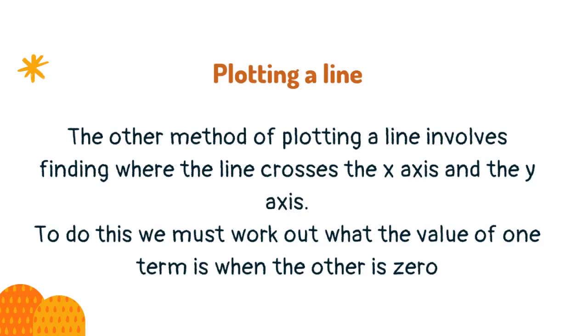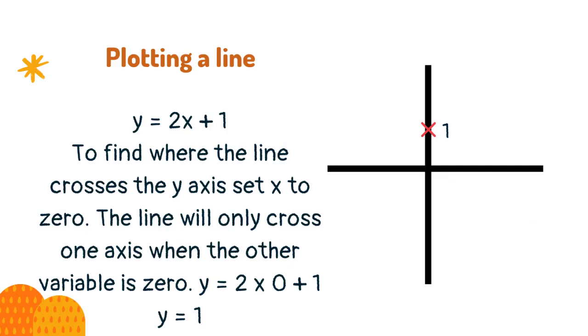The other method of plotting a line involves finding where the line crosses the x axis and the y axis. To do this, we must work out what the value of one term is when the other is zero. We can find the y-intercept by looking at the last part of the equation. If there is nothing after the x term, then the line will cross at the origin.